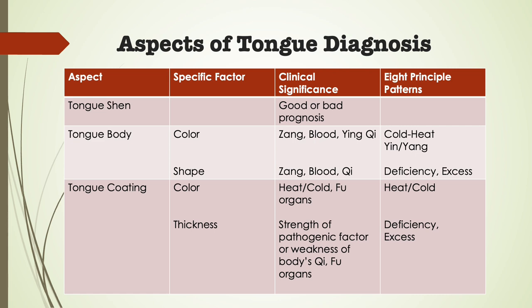The tongue coating is a natural consequence of transformation of ingested food and liquids in the stomach — it is some of the dirty residue rising upwards along with the pure qi separated from the impure dross. The tongue coating should be thin enough to enable the tongue itself to be seen through it. The tongue should look like a wheat field in spring when the wheat has sprouted: the soil can still be clearly seen, but the field has a green hue, and when you look closer, you can distinguish the individual wheat sprouts. Similarly, you should be able to see the body of the tongue through the coating, and the coating should look like small individual dots on the tongue.